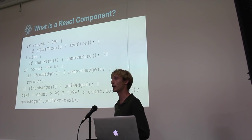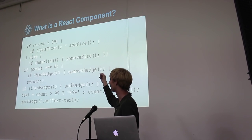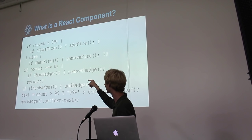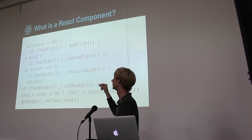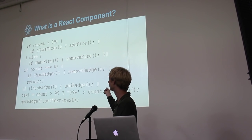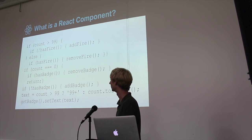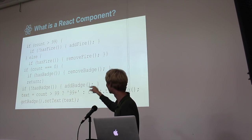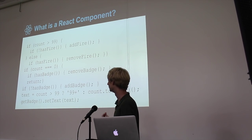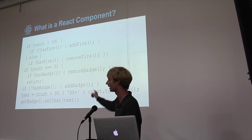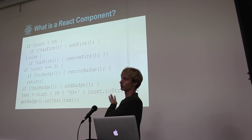If we look at what that code would look like: if count is greater than 99 and it does not have fire, then we add fire. Else, if it has fire, we remove the fire because count is not greater than 99. If count is equal to zero and it has a badge, we want to remove the badge. If it does not have a badge, we want to add a badge, set some string, then set the badge string. This is an example just with three states, and it's very difficult to reason about what's going on.